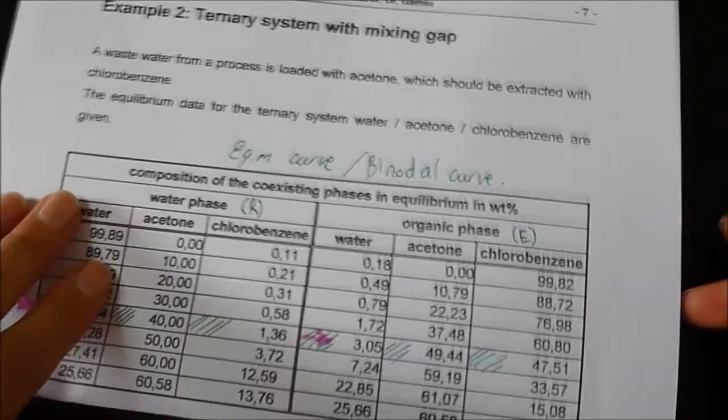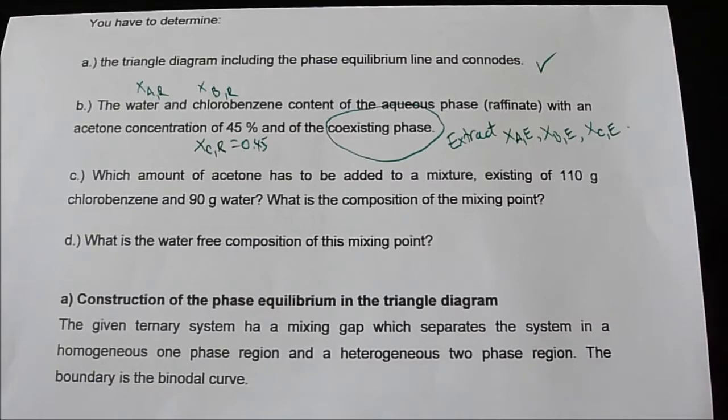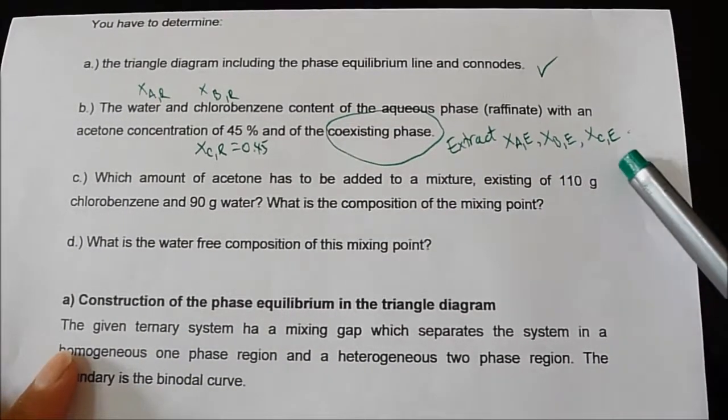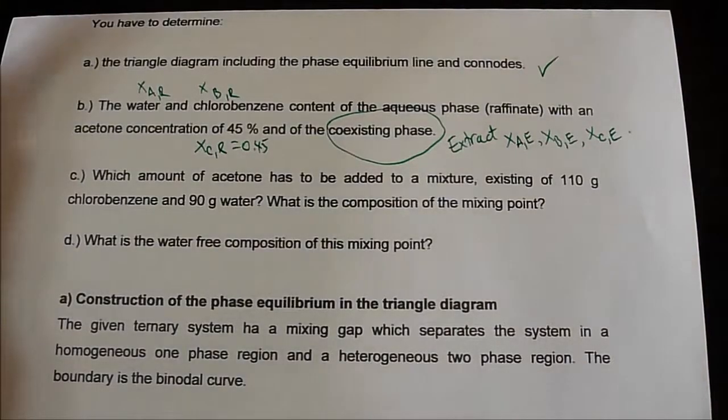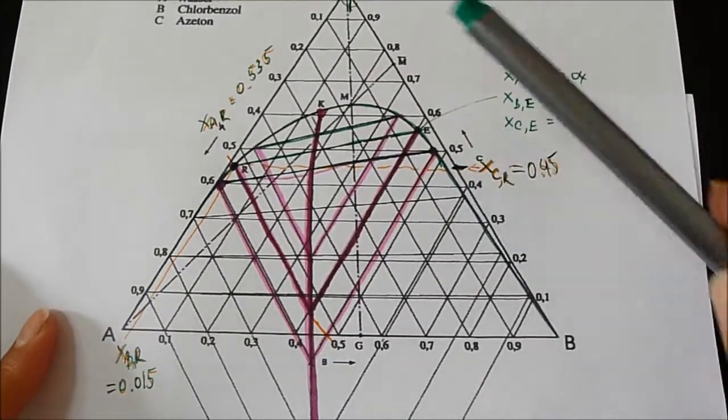Part A has been solved. The second question asks us to find the water and chlorobenzene content of the aqueous phase raffinate with an acetone concentration of 45% and of the coexisting phase. This problem statement has given us XCR. XCR is equal to 0.45, and we need to find XAR and XBR. We also need to find the mole fraction of the coexisting phase, which is for the extract: XAE, XBE, and XCE. XCR 0.45 is over here, and C point is over here.